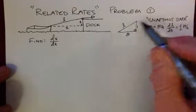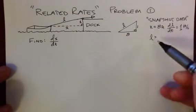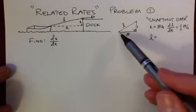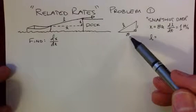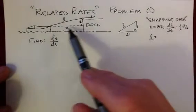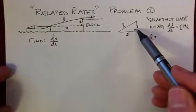The way I'm looking at this is I'm thinking, what's the snapshot data? What's the basic information we've got? We've got this right triangle. We know that the boat is eight feet away from the dock along this extra dimension. The rope is going up one foot.